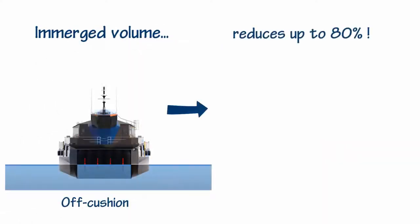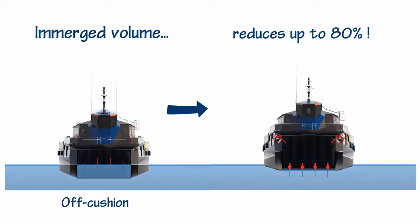Emerged volume reduces up to 80% when the air cushion is in use, and consequently, the hull resistance is significantly reduced.